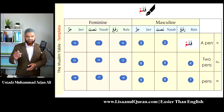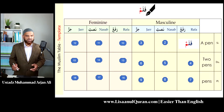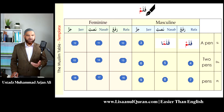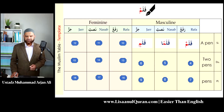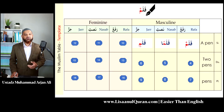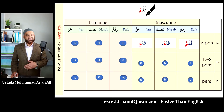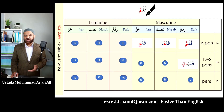Take the word 'pen', which we know is 'qalam'. If we put it in the Muslim table, for the singular it will be exactly the same because it has tanween — it belongs to the 85%. For the dual, again, exactly the same as every other dual in Arabic that we've learned so far.